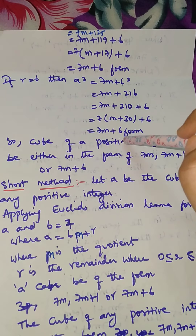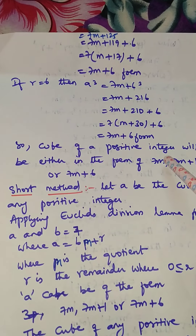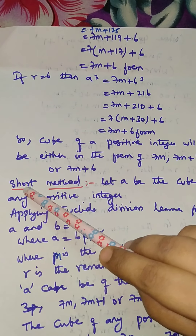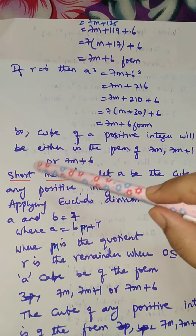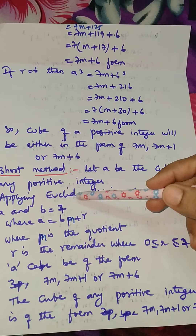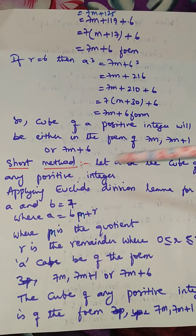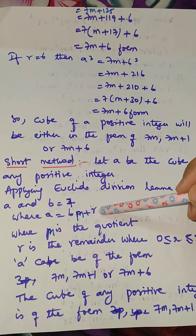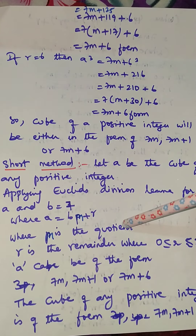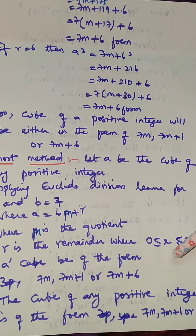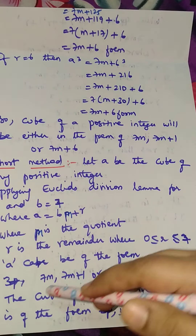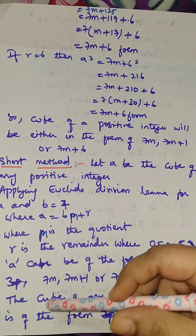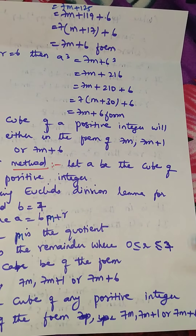So the cube of a positive integer will be either in the form of 7m, 7m plus 1, or 7m plus 6. Now for the short method: let a be the cube of any positive integer. Applying Euclid's division lemma for a and b equals 7, we get a equals bq plus r, where m is the quotient and r is the remainder where 0 is less than or equal to r less than 7. Therefore a can be in the form 7m, 7m plus 1, or 7m plus 6.